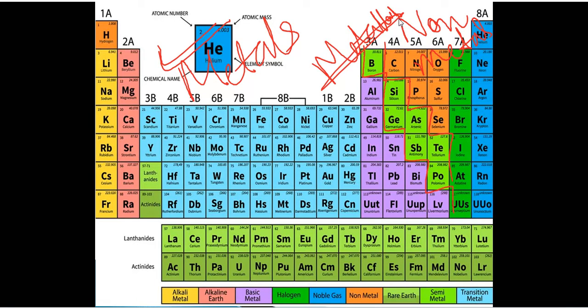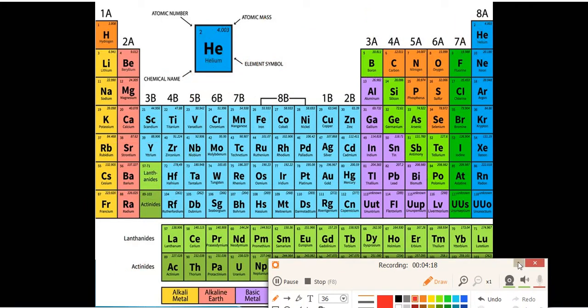At the bottom of the periodic table, lanthanides and actinides are separated and given a different place. In total, the modern periodic table has 18 groups — vertical columns — and 7 periods — horizontal rows.